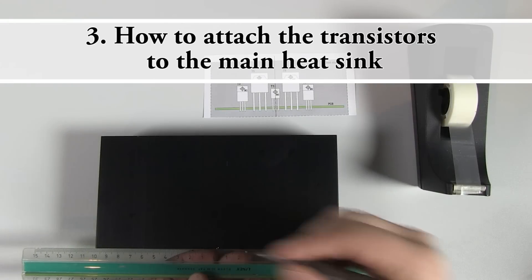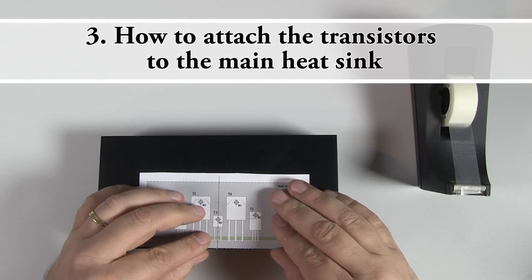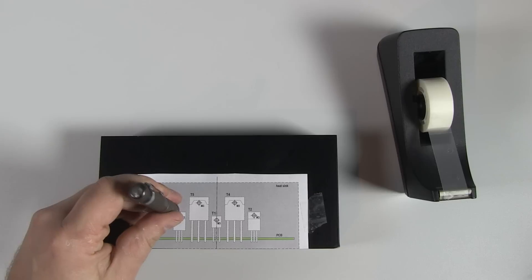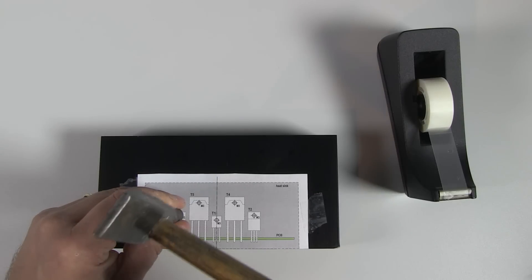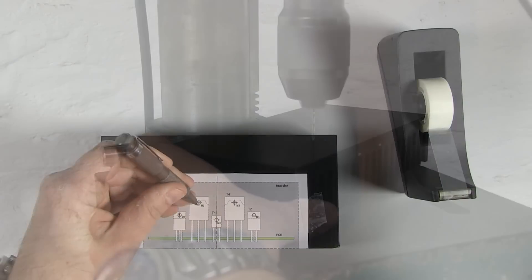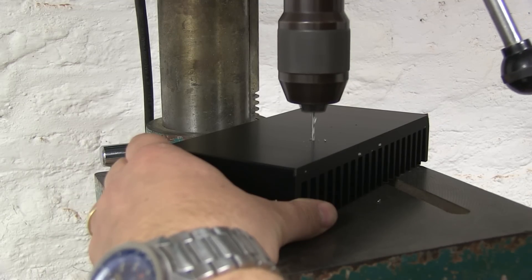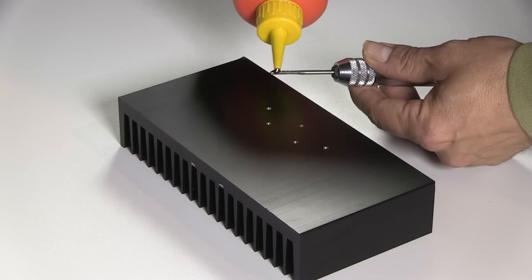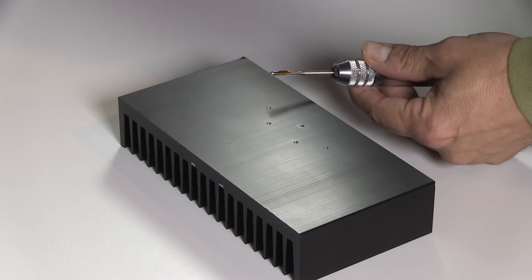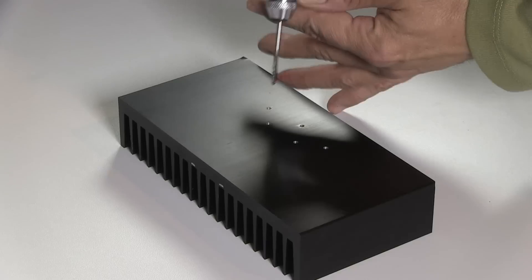First, mark the positions of the hole in the main heatsink, using the template. Drill the 5 holes with a 2.5mm drill, and tap M3 threading into the holes.